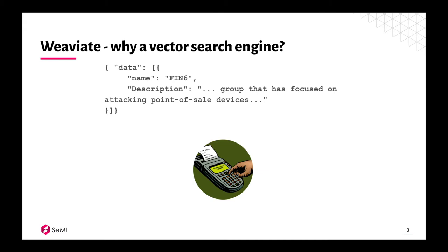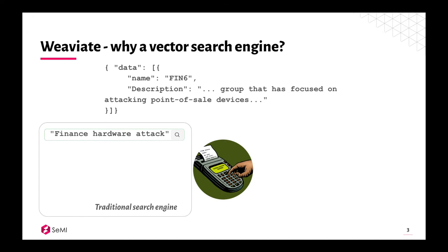The simplest way to show the difference between a traditional search engine and a vector search engine is this: take a data object representing a cybersecurity threat group — FIN6, a group focused on attacking point-of-sale devices. If we store this in a traditional search engine and search for 'finance hardware attacks,' it will not find anything because the exact keywords are not matched in this data object.